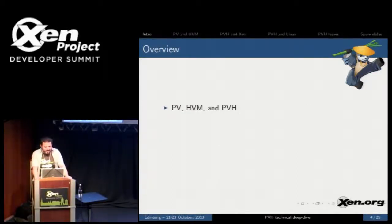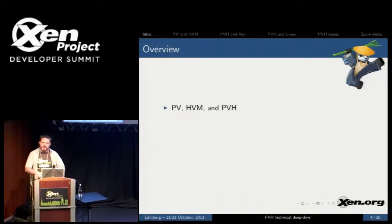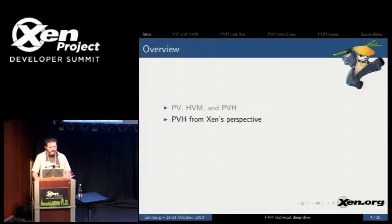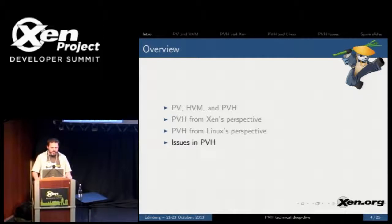In order to do that, I'm going to start with an overview of PV and HVM, and some of the things which we wish were better about them, and then talk about PVH. Then I'm going to do a fairly technical description of PVH from Xen's perspective, then PVH from Linux's perspective, and then we're going to talk about some of the outstanding issues of PVH that still need to be sorted out.